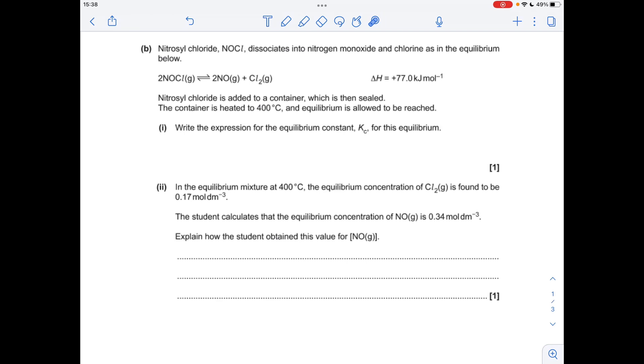so we've got to write the Kc expression for this equilibrium. So Kc is a measure of the equilibrium concentrations of the products to reactants, and remember that any balancing numbers become powers and terms are multiplied by each other, not added. So the Kc expression looks like that. Next part,